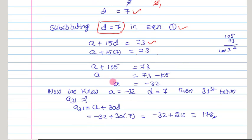Transposing 105 to the other side of the equation, we get a = 73 - 105, which gives a = -32.